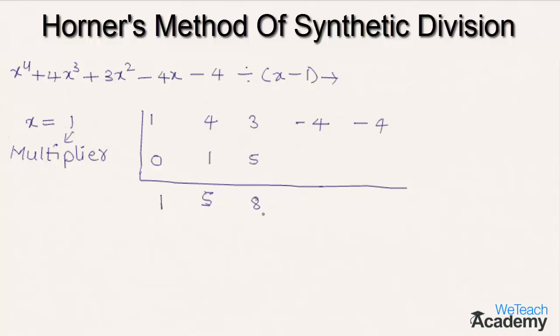Let us multiply the common multiplier 1 with 8. We get the result as 8, and let us write it below the coefficient of x, -4. Here, -4 + 8 would come as 4.